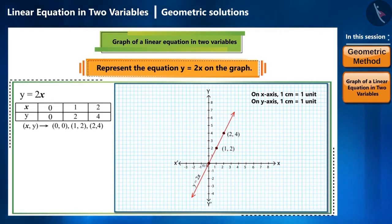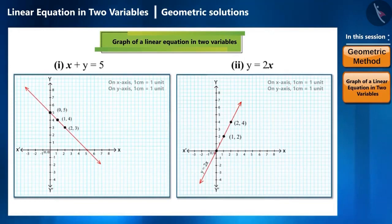Now, when we compare these two graphs that we have made, we can see two types of lines. One of them does not pass through the centre, whereas the other one passes through the centre.